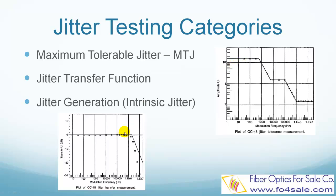Jitter transfer function is a test of jitter transmitted from input to output of a regenerator. It is a ratio of the amplitude of the equipment's output jitter to the applied input jitter, ensuring that once installed in a system, the equipment won't cause an unacceptable increase in jitter. This bottom figure shows an OC48 jitter transfer function test. Jitter generation, also called intrinsic jitter, measures the jitter at an equipment's output when there is no jitter applied at the input.